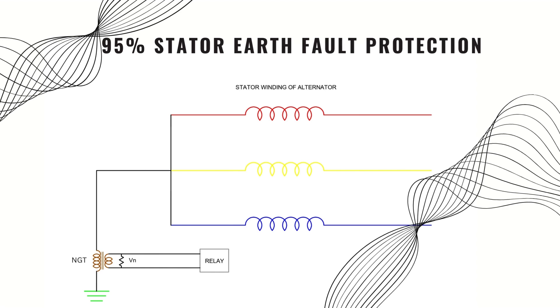In the 95% stator earth fault method, the relay continuously monitors the voltage across the resistor connected to the secondary terminal of the NGT. When the voltage exceeds the predetermined value, the relay senses an earth fault occurred in 95% portion of the stator and trips the generator. Let's understand how this logic works.